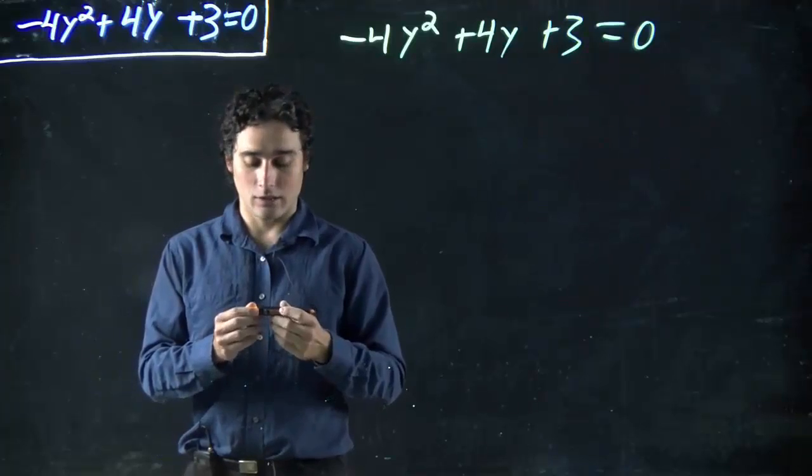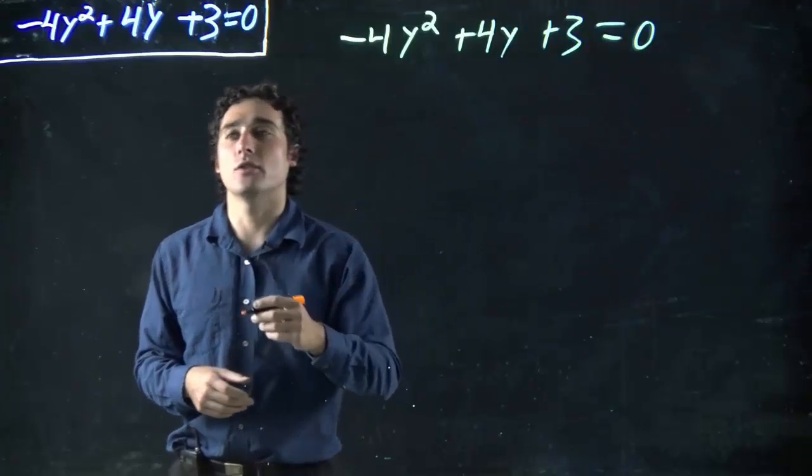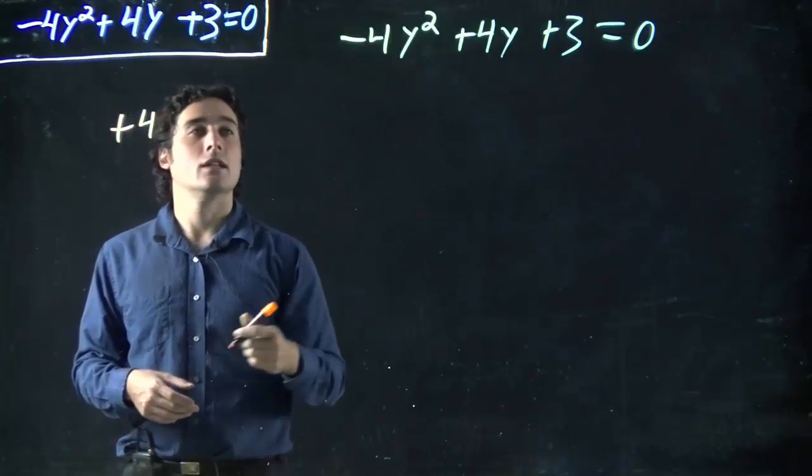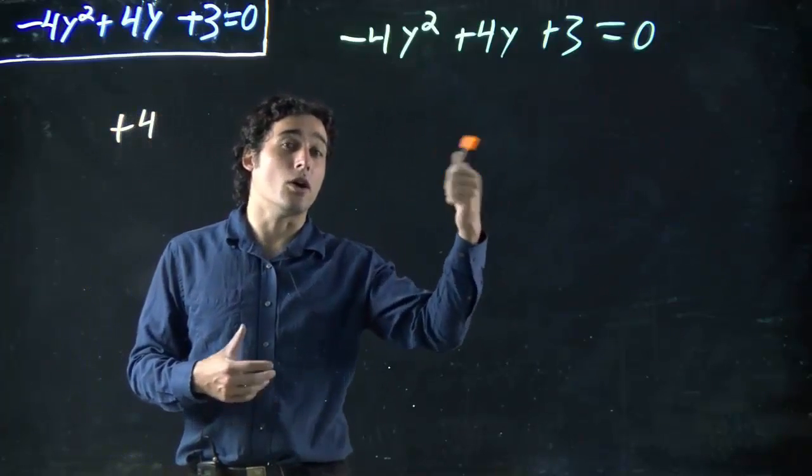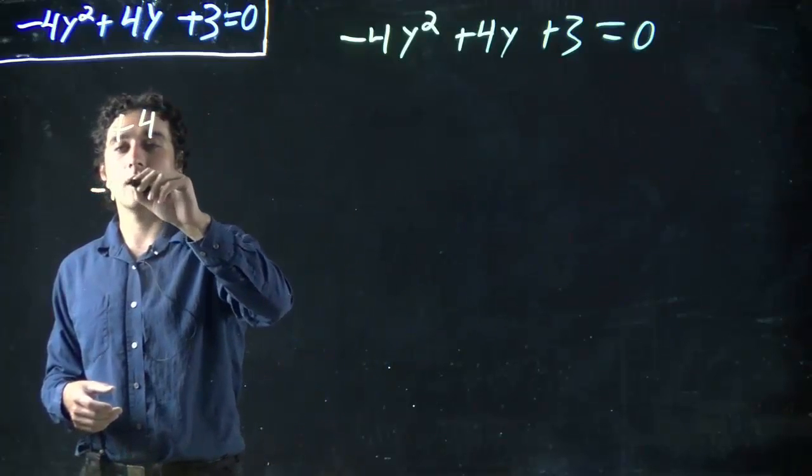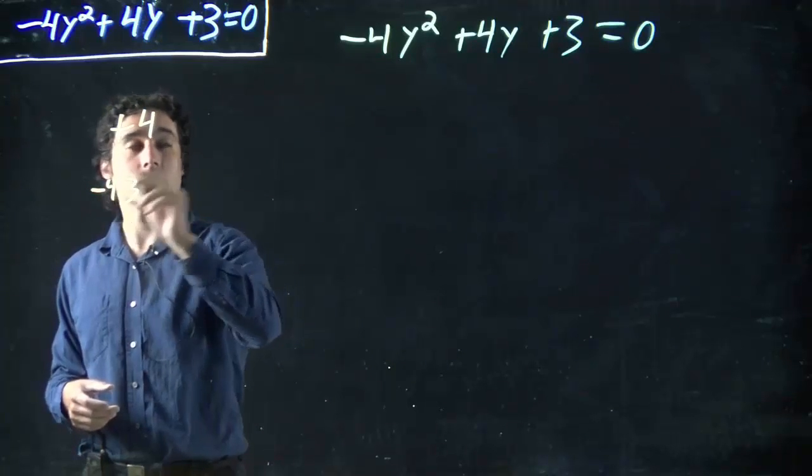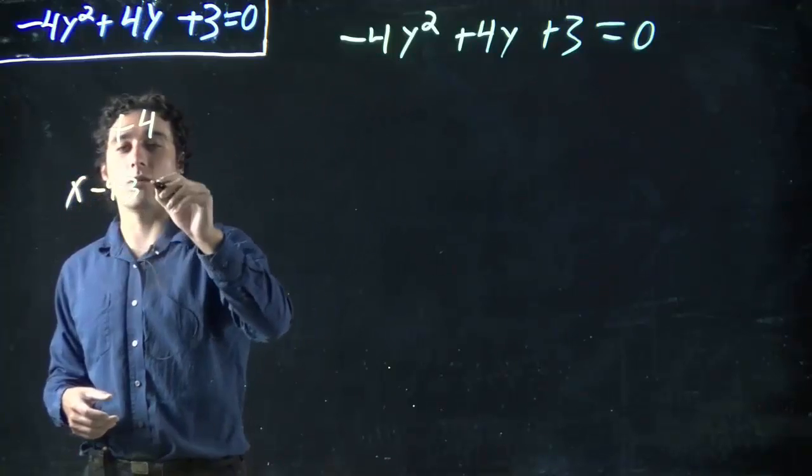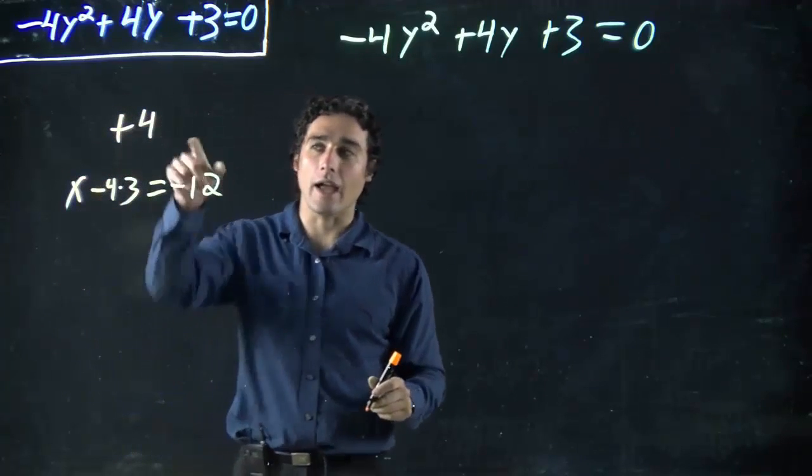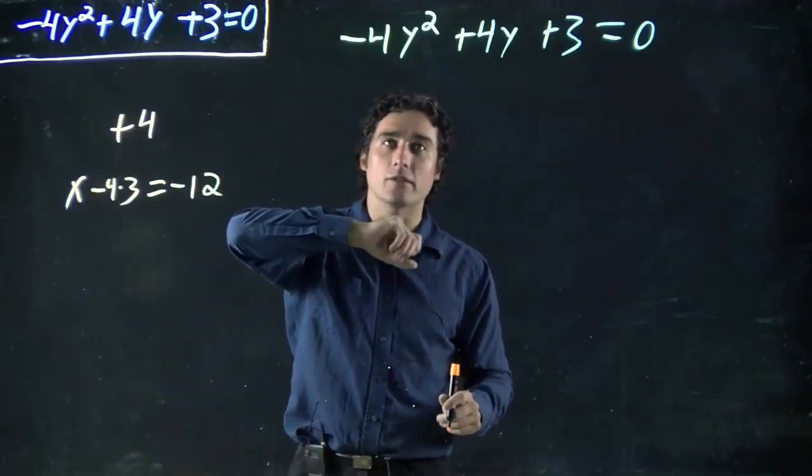We're still looking for two numbers that add to give us plus 4, but the numbers we're looking to multiply have to be -4 times 3, so it's plus 3. So two numbers that will multiply to give us -12, add to give us plus 4, multiply to give us -12.